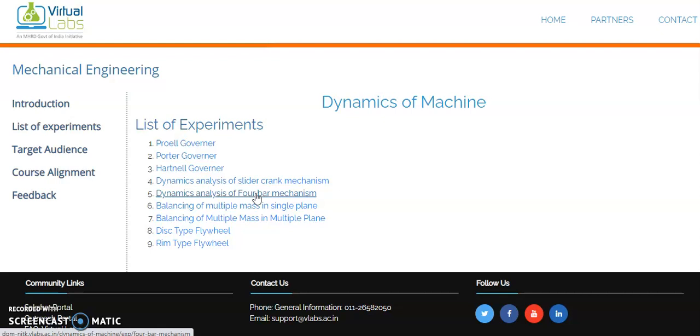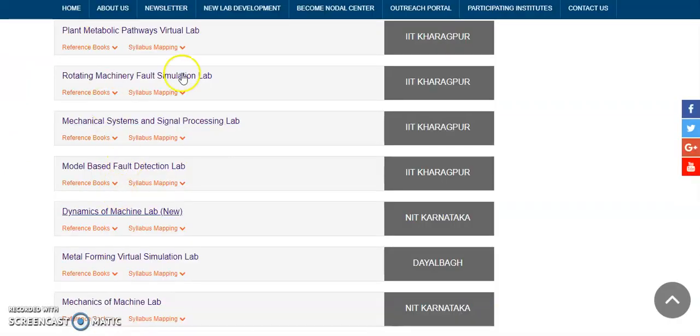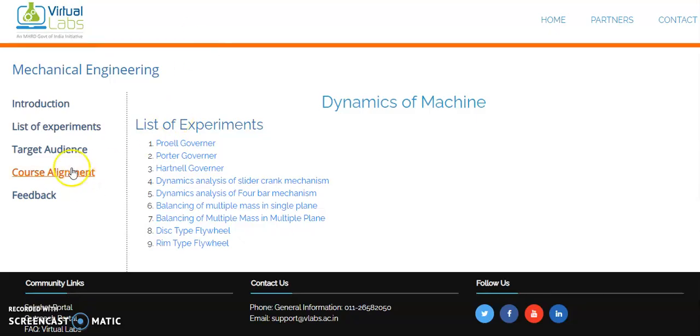After that, you can follow the procedure through the list of experiments that is available. Here, this is the page you can open. It is available with Dynamics of Machines Lab, which was given by NIT Karnataka, the hosting institute for this particular laboratory. If you open Dynamics of Machines Lab, we have the list of experiments.